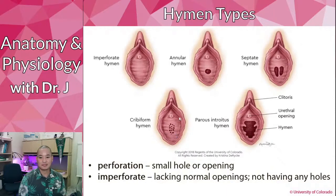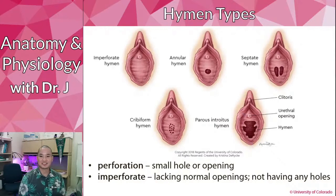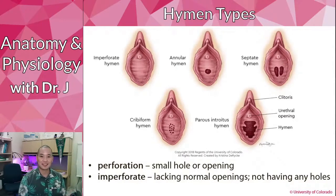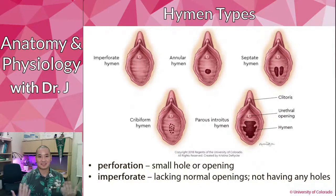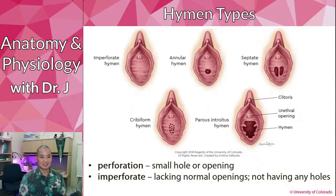Annular, septate, and cribriform hymens, even though they are different shapes, are normal. Some may have a thin bit of membrane — not all hymens are perfectly circular; you can have multiple holes. The parous introitus only occurs after a specific condition: notice that the opening is really large with a big diameter. Something like a six-to-ten pound object had to come through, so this typically happens after a woman gives birth vaginally. The baby essentially passes through the hymen, taking much of the membrane with it. Even though it is very large, it is not pathological.